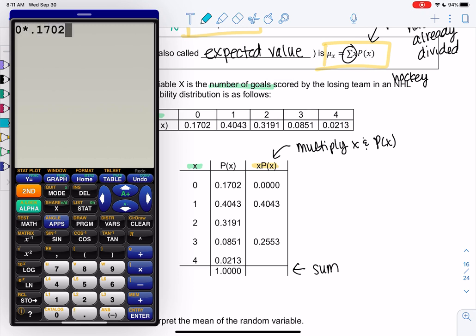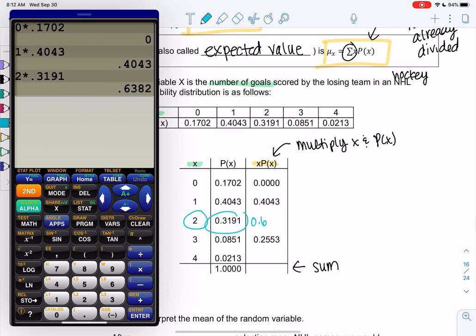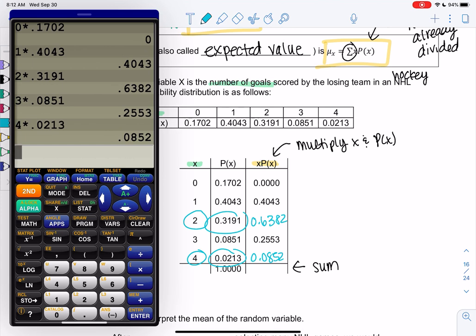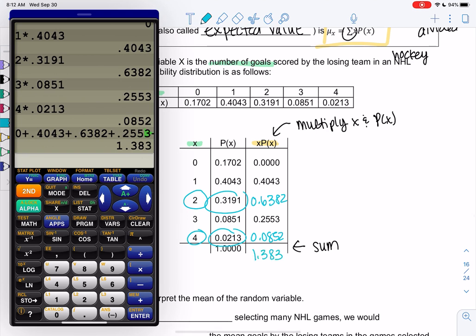So 0 times 0.1702, we get 0. I already did the first two rows for you. 2 times 0.3191, just multiplying these two numbers, and we get 0.6382. So we're basically multiplying the data by the frequency and dividing by the total all in one step. Because probability has kind of done that for us already. And then the final row, 4 times 0213, so we get 0.0852. And then we add them up to find an average. We find a total. And we don't have to divide again because probability has already done the division for us. So it's a little bit different than the average we're used to. And we get 1.383. That is actually our average.